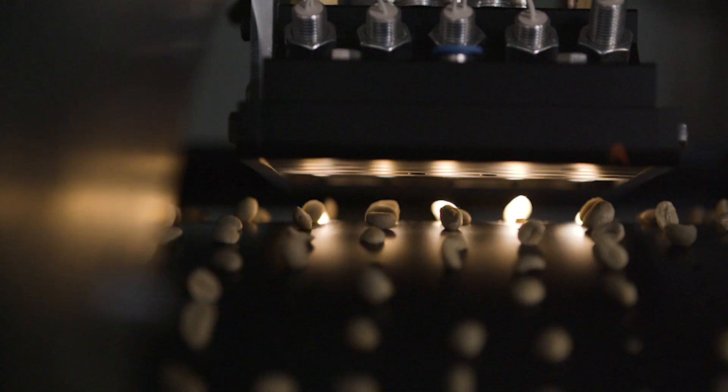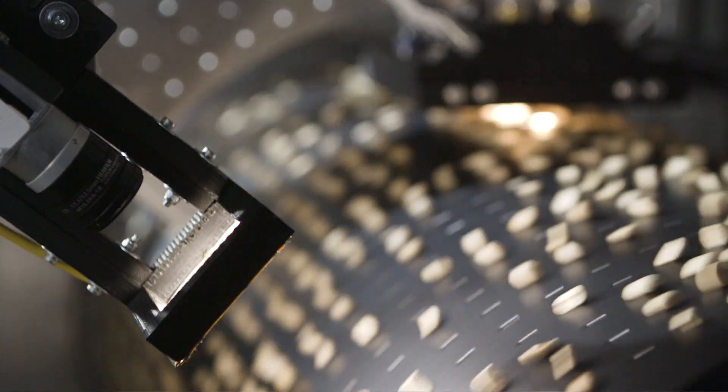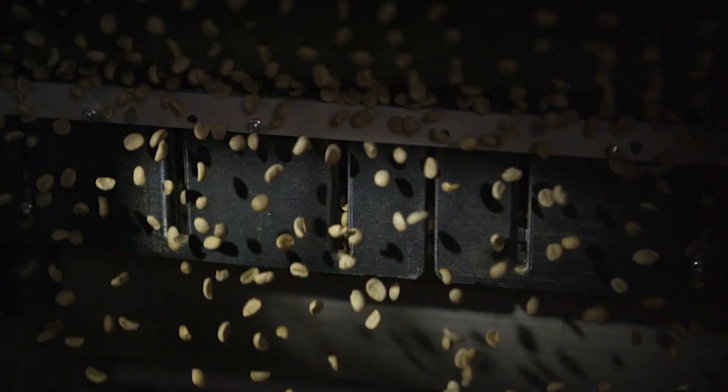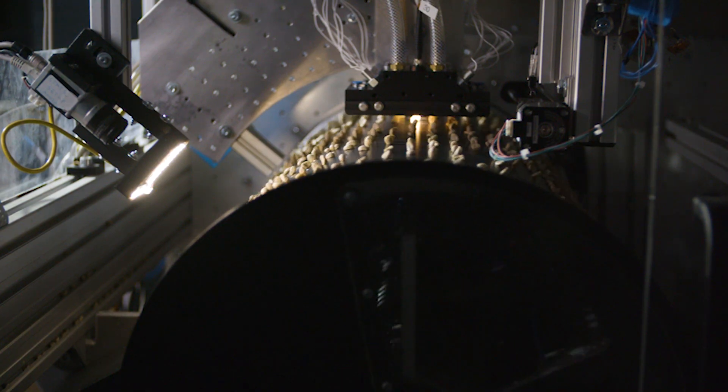As you can see here we can transport every individual bean one by one. And then we have a measurement area where we take spectra, but we also take images. And then when the seeds are moving forward, based on what the customer wants, we can separate them in two, three, or more quality classes just in one pass.